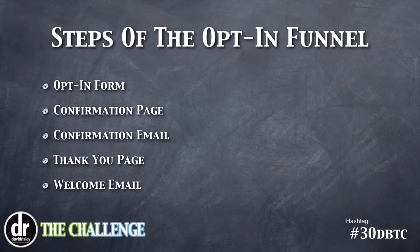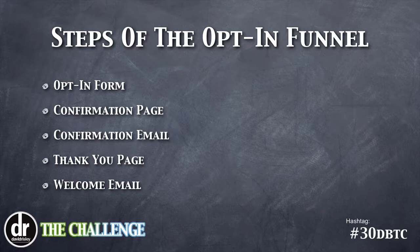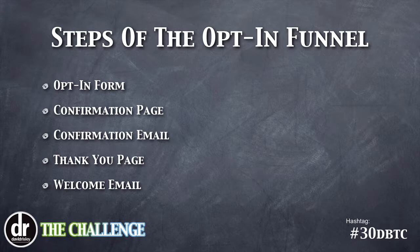Let's look at the steps of the opt-in funnel. First, you obviously have the opt-in form itself — you can either have a bribe there or not. Next is the confirmation page, where they go after hitting submit. It generally says you need to confirm your email. Once they're on that page, a confirmation email is triggered — and that's yet another step of the funnel.